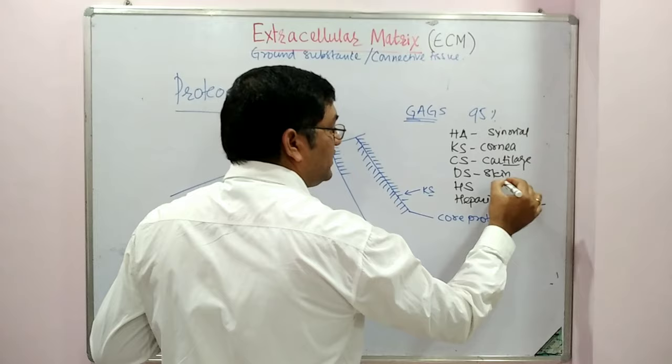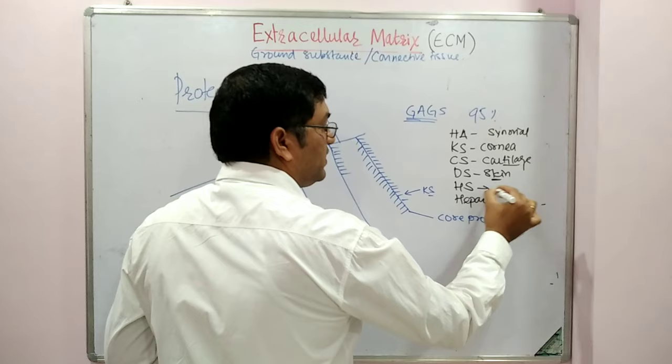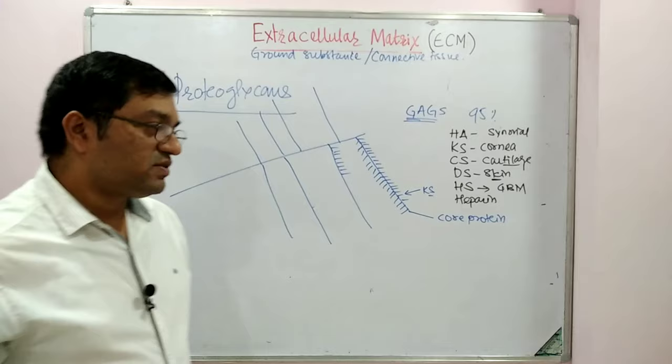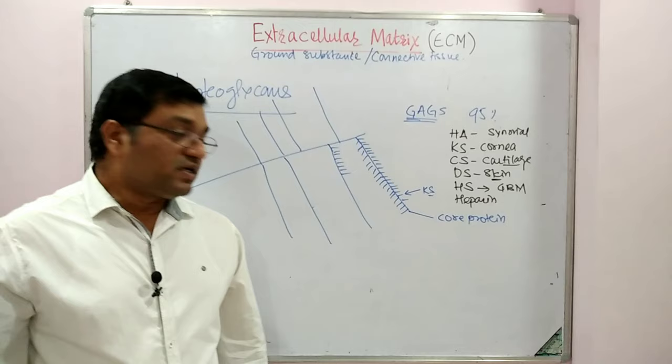Heparan sulfate is present in the glomerular basement membrane, responsible for charged selective glomerular filtration. Heparin is an anticoagulant present in the lung.